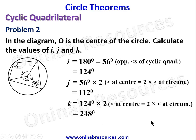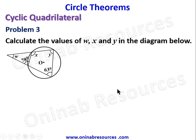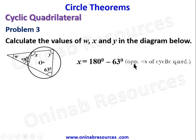Problem 3: calculate the values of W, X, and Y in the diagram. We have another cyclic quadrilateral. X equals 180 minus 63 degrees — opposite angle of a cyclic quadrilateral — which gives 117 degrees.